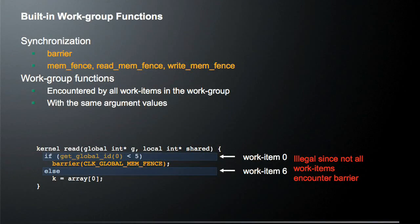Let's look at the built-in work group functions. There's synchronization via barriers, which synchronize execution between elements in a work group, and mem fences that synchronize memory. You can specify a barrier on reads or writes to give hints to the hardware for further optimizations. One important note: if you have a barrier inside an if statement conditioned on globalID, that is illegal because not all work items will encounter the barrier. You must ensure all work items in the work group execute the same barrier function.